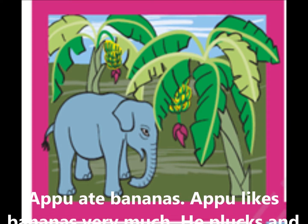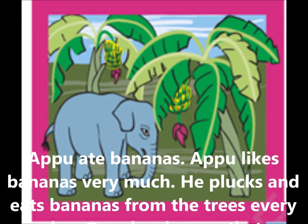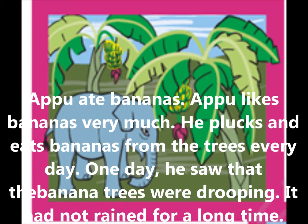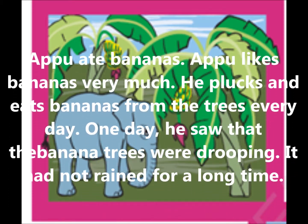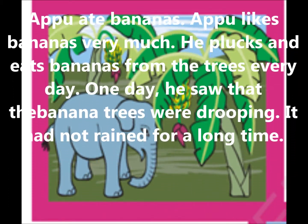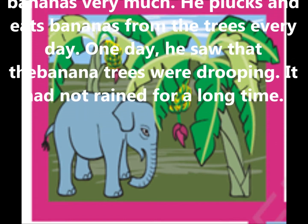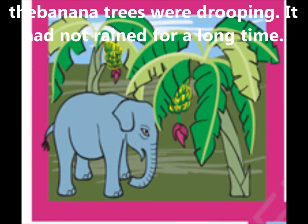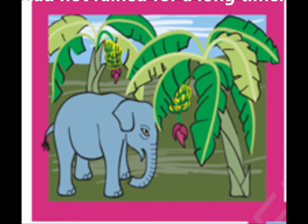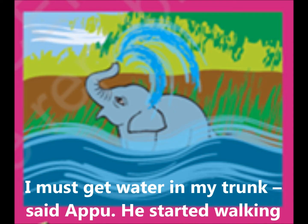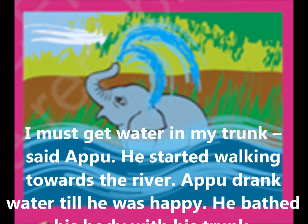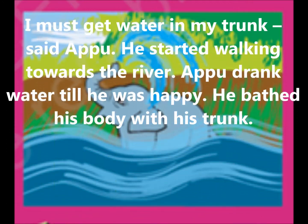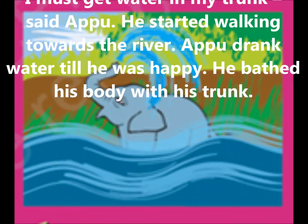Here in this story, there is an elephant whose name was Appu. Appu liked bananas very much. He would pluck and eat bananas from the trees every day. One day he saw that the banana trees were drooping. It had not rained for a long time. 'I will get water in my trunk,' Appu said to the banana tree. He started walking towards the river. Appu drank water and was happy.